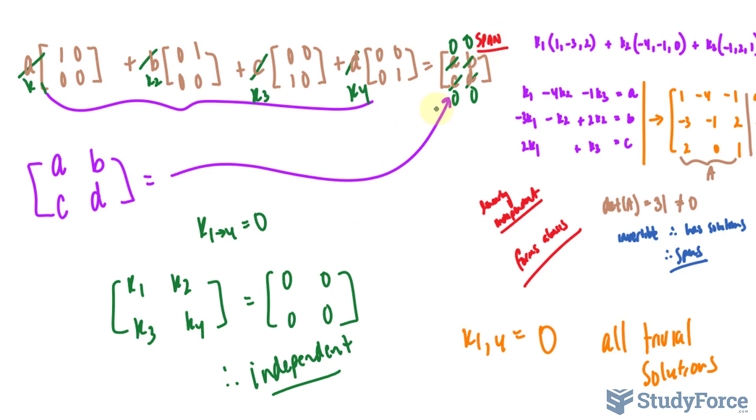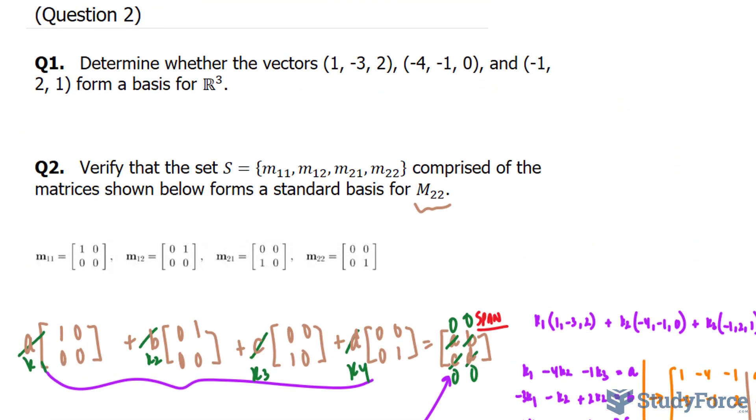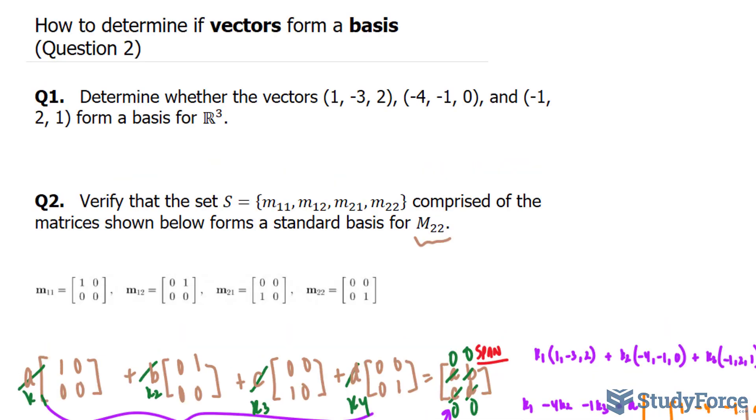Since it both spans and is independent, we can say with complete confidence that these matrices in this set form a standard basis for a 2 by 2 matrix. And that is how to determine if vectors and matrices form a basis.